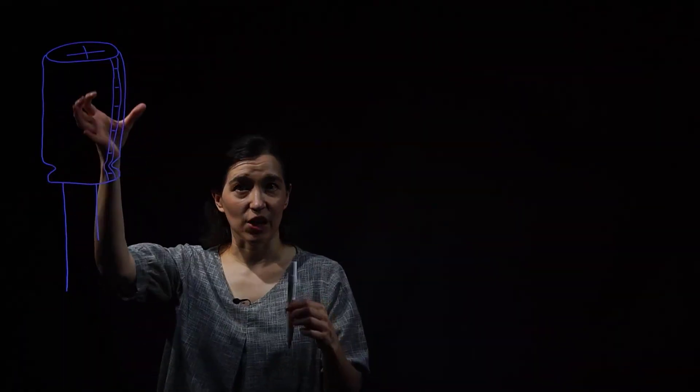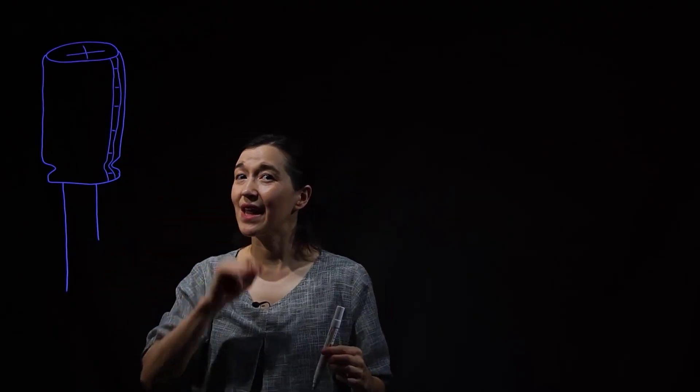All right, so this is an electrolytic capacitor, and it looks like this. It's like a little can, and it has this little cross at the top. This is actually a little bit of a release valve because these can explode, and they may explode if you put them the wrong way. What do I mean by that?